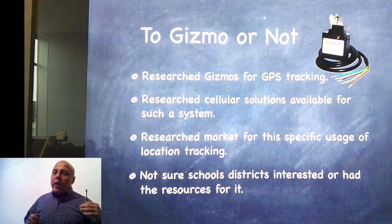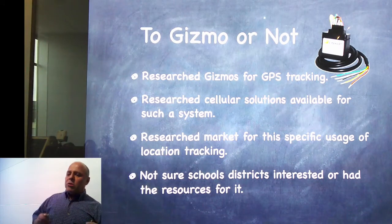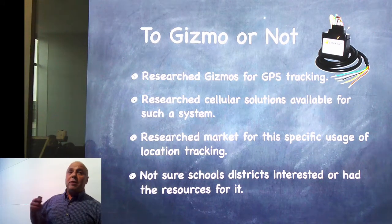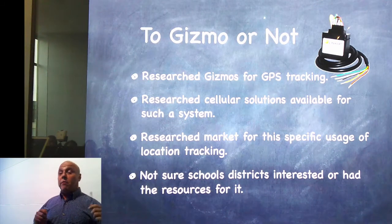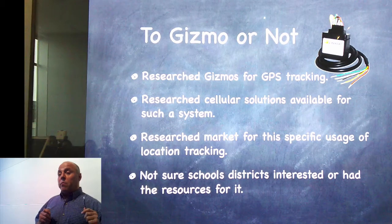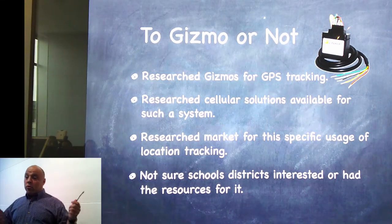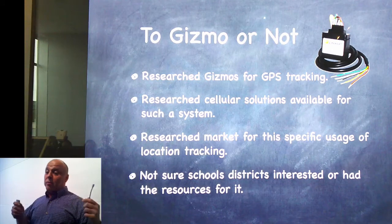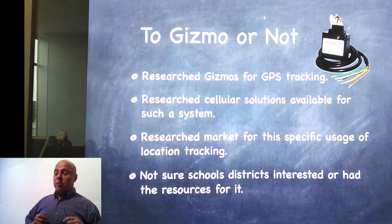As we researched the different gizmos available for GPS tracking — and there are plenty of them — they come with a cellular radio, so you can get a gizmo that has a GPS tracker as well as a cellular radio.